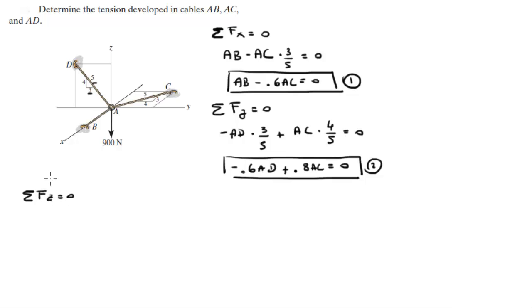You know that the sum of the forces on the Z direction is equal to 0. Going up and down, you got the Z component of AD which is AD times 4 over 5 minus the 900 Newton force that you see right there, and that is equal to 0. So 0.8AD minus 900 is equal to 0.